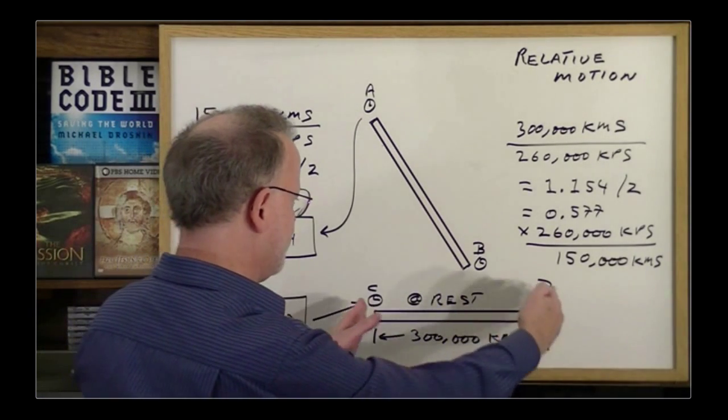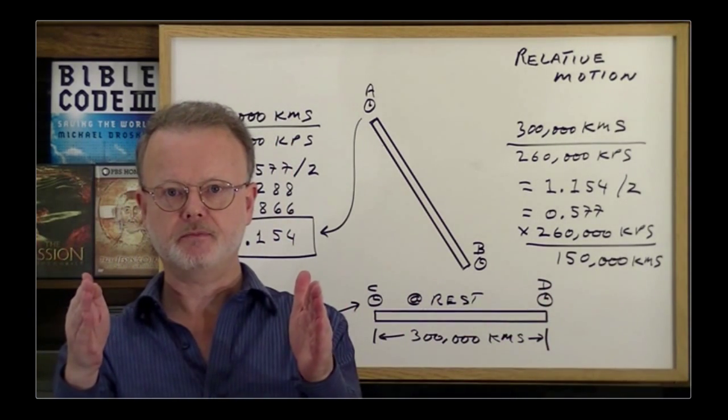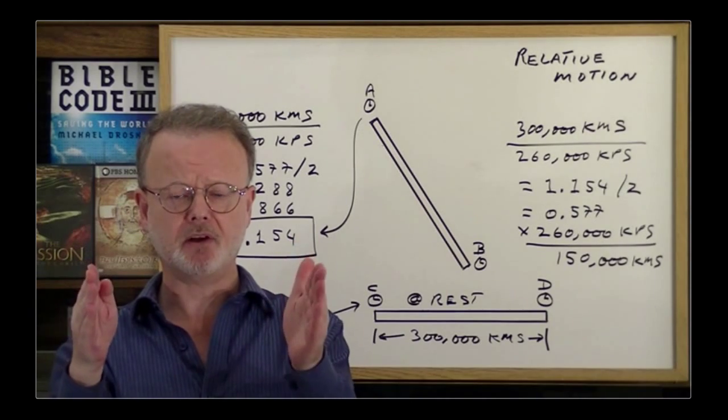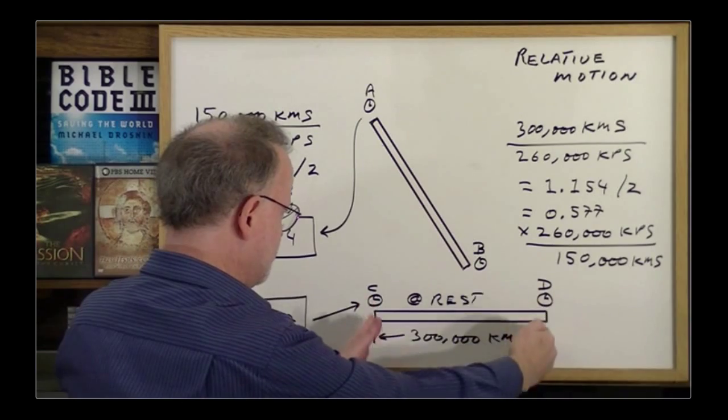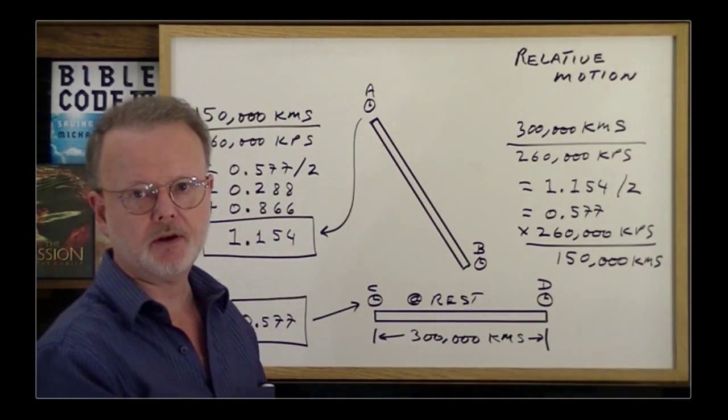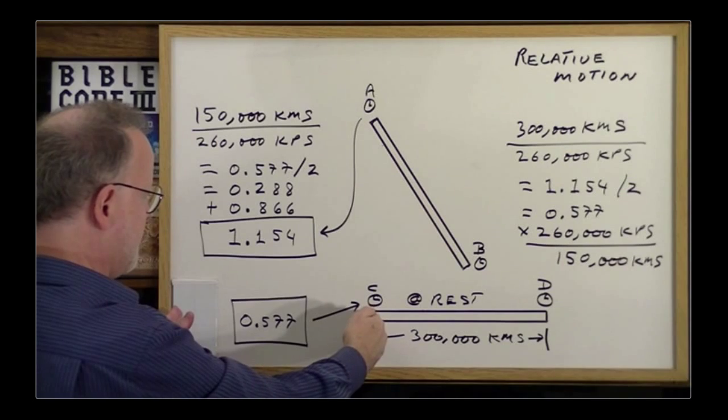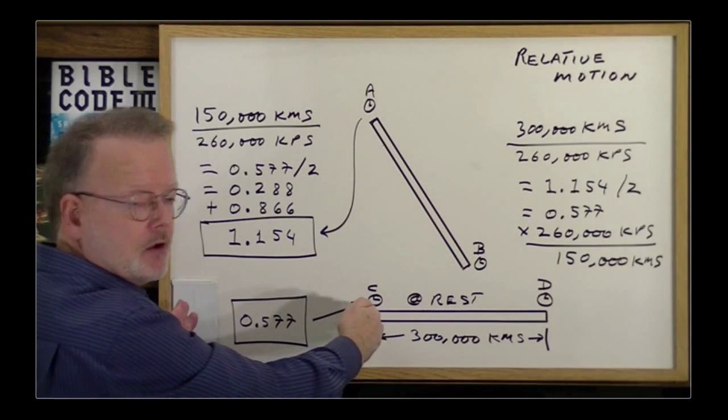Imagine that this is a train, and I have an identical train, same length. I have clocks at the ends, clock A and clock B. Let's say I put them, both trains line them up together, and all clocks say 12 o'clock. Or I could take my train and put it over here, and again, all clocks say 12 o'clock.